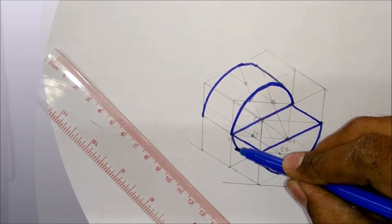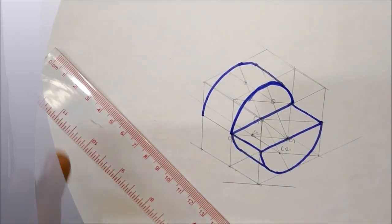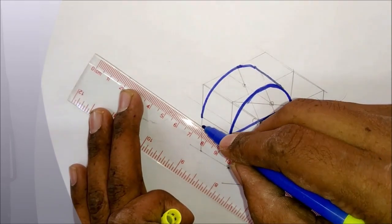Now we have to draw the bottom arc. So for that whatever the center we have used earlier, we have to shift that center and radius 20mm behind.